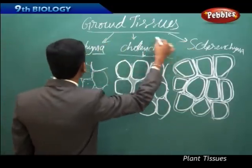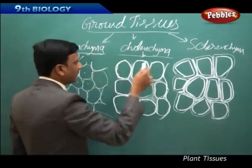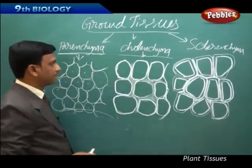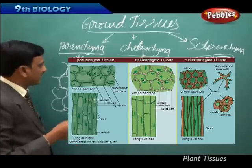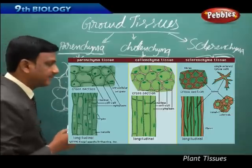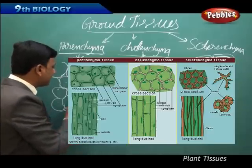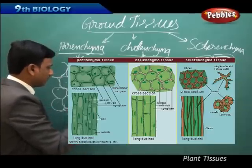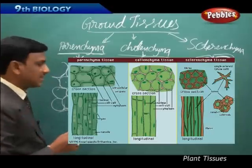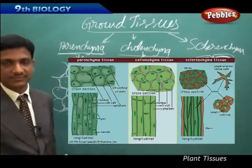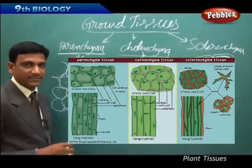Ground tissues are divided into three main types: parenchyma, colenchyma, and sclerenchyma. Parenchyma cells are thin-walled and loosely packed with many air spaces between them. These parenchyma cells are soft in nature.